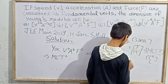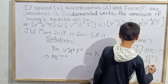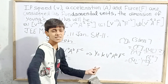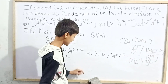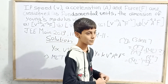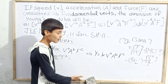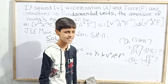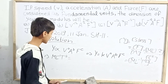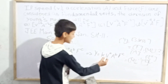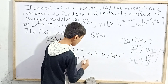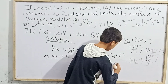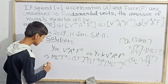So the dimensional formula for Young's modulus of elasticity is ML⁻¹T⁻². The constant k is dimensionless. Now we write the dimensions of the fundamental quantities: speed v has dimensions LT⁻¹, acceleration a has dimensions LT⁻², and force f has dimensions MLT⁻². So: ML⁻¹T⁻² = k · (LT⁻¹)^a · (LT⁻²)^b · (MLT⁻²)^c, where k is dimensionless.